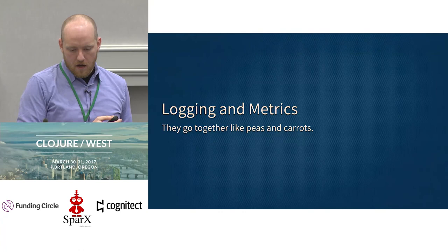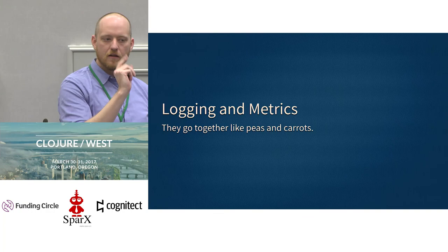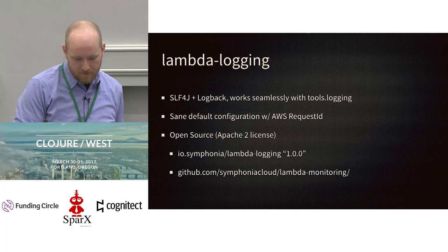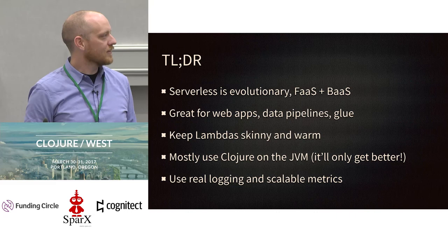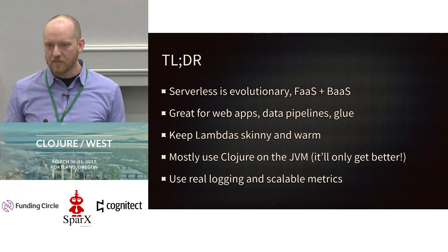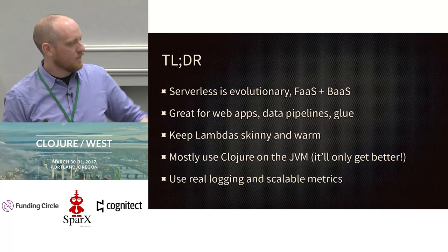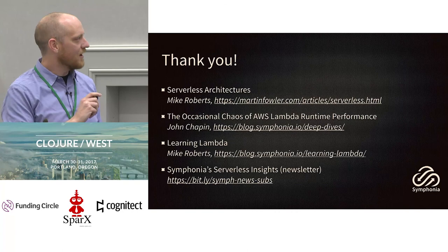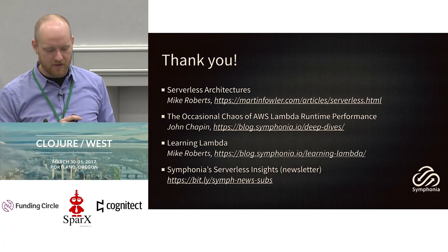I'm already a few minutes over, so I'm not going to dive into logging and metrics. There is a version of this talk online on the Symphonia webpage that has a video link to a Java SIG presentation going into more detail on logging and metrics. The TLDR: serverless is evolutionary, it's FaaS and BaaS, it's great for web apps and data pipelines, keep your Lambdas skinny and warm, mostly use Clojure on the JVM, and it's going to continue to get better as we get new versions of Clojure and Java. Use real logging and scalable metrics. We have a very informative newsletter if you're interested in serverless in general, or AWS and Java serverless specifically. Thank you very much.